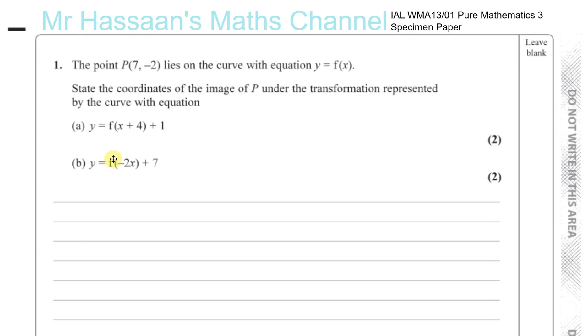First question is about transformations of graphs. It says point P(7, -2) lies on the curve with equation y = f(x). There's no diagram here, but it tells us to state the coordinates of the image of P under the transformations represented first by y = f(x + 4) + 1. When dealing with this type of transformation, we always start with what's inside the function. What's inside the function always affects the x-coordinate, and what's outside the function always affects the y-coordinate.